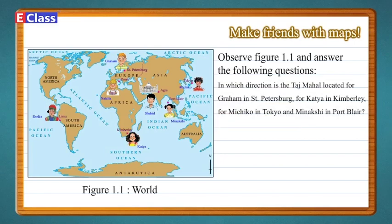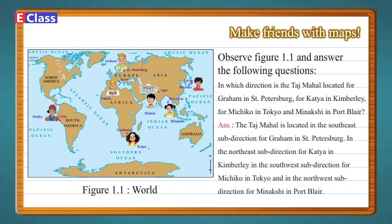In which direction is the Taj Mahal located for Graham in St. Petersburg, for Katya in Kimberley, for Michiko in Tokyo, and Meenakshi in Port Blair? Answer: The Taj Mahal is located in the south-east sub-direction for Graham in St. Petersburg, in the north-east sub-direction for Katya in Kimberley, in the south-west sub-direction for Michiko in Tokyo, and in the north-west sub-direction for Meenakshi in Port Blair.